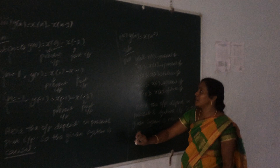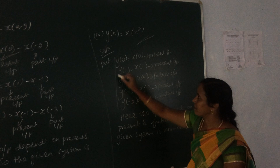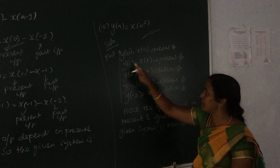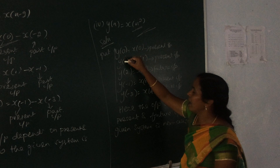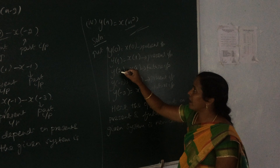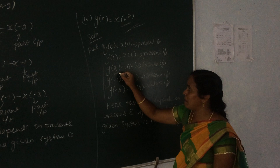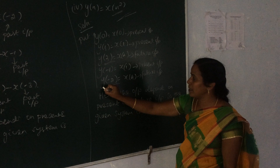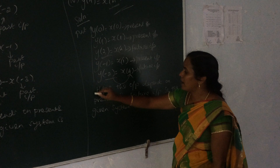The last problem: y(n) = x(n²). Substituting different values for n: when n = 0, output = x(0), present input. When n = 1, n² = 1, so output = x(1), present input. When n = 2, n² = 4, so output = x(4) — that is the future input. When n = -1 or -2, the output again depends upon the future input. So the output depends upon the present as well as future input, and the given system is a non-causal system.